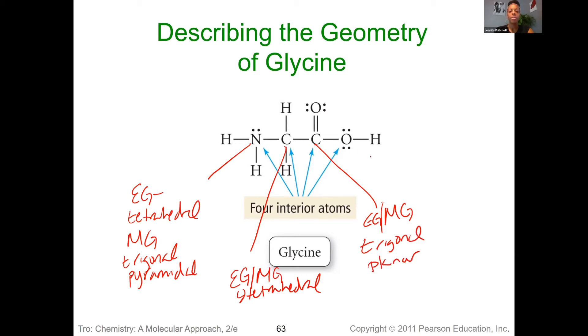And then for the oxygen here, with the two lone pairs and with the two bonding regions, electron geometry will still be tetrahedral, and the molecular geometry will be bent.